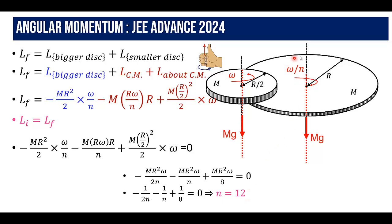So the larger disc rotates at a much smaller speed. If the smaller disc rotates at 12 rad/s, the larger disc rotates at only 1 rad/s. This problem illustrates how angular momentum conservation can be applied when there is no torque in the vertical direction. I hope you liked this video — please share and subscribe, and I'll see you in the next video.